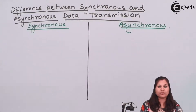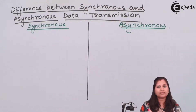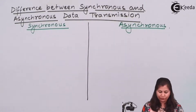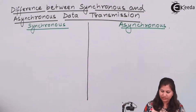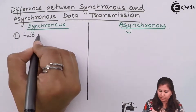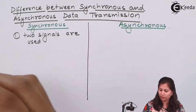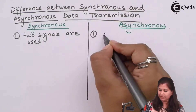This clock pulse indicates to the receiver from where the data is starting and at what position the data is ending. So in the synchronous method a clock pulse and a data signal are used, whereas in the case of asynchronous only one signal is used — that is the data signal. So the first basic difference is that in synchronous two signals are used, whereas in asynchronous only one signal is used.